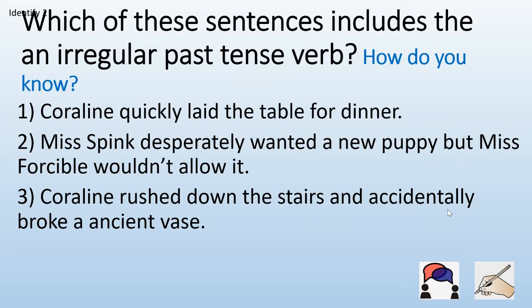Which of these sentences includes an irregular past tense verb, and how do you know? Sentence one: Coraline quickly laid the table for dinner. Sentence two: Miss Spink desperately wanted a new puppy, but Miss Forcible wouldn't allow it. Sentence three: Coraline rushed down the stairs and accidentally broke an ancient vase. Pause the video and tick or cross.